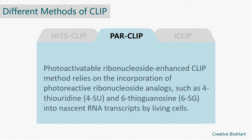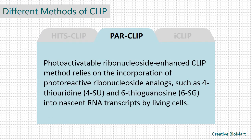PAR-CLIP, namely photoactivatable ribonucleoside-enhanced cross-linking and immunoprecipitation, is a biochemical method used for identifying the binding sites of cellular RNA-binding proteins and microRNA-containing ribonucleoprotein complexes. The method relies on the incorporation of photoreactive ribonucleoside analogs, such as 4-thiouridine and 6-thioguanosine, into nascent RNA transcripts by living cells.